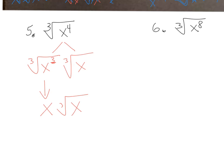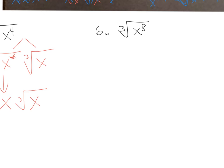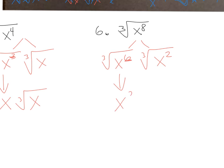Number six: the cube root of x to the eighth. Separate into two cube roots. The largest perfect cube in x to the eighth is x to the sixth (since 6 is a multiple of 3) times x squared. The cube root of x to the sixth — divide 6 by 3 — is x squared. So the answer is x squared times the cube root of x squared.